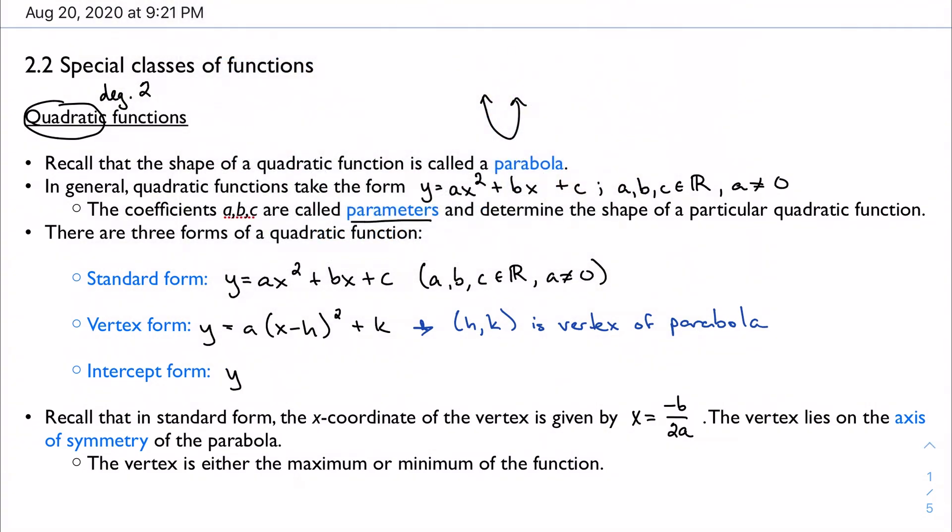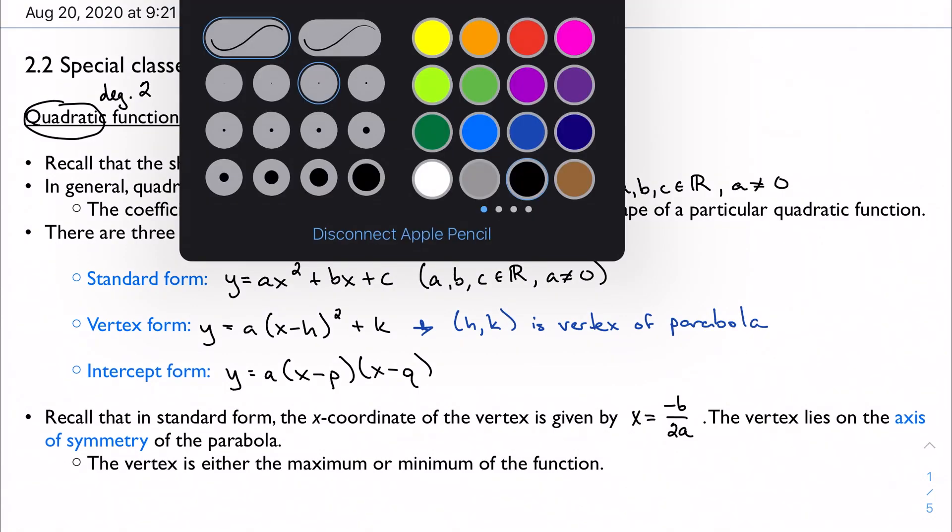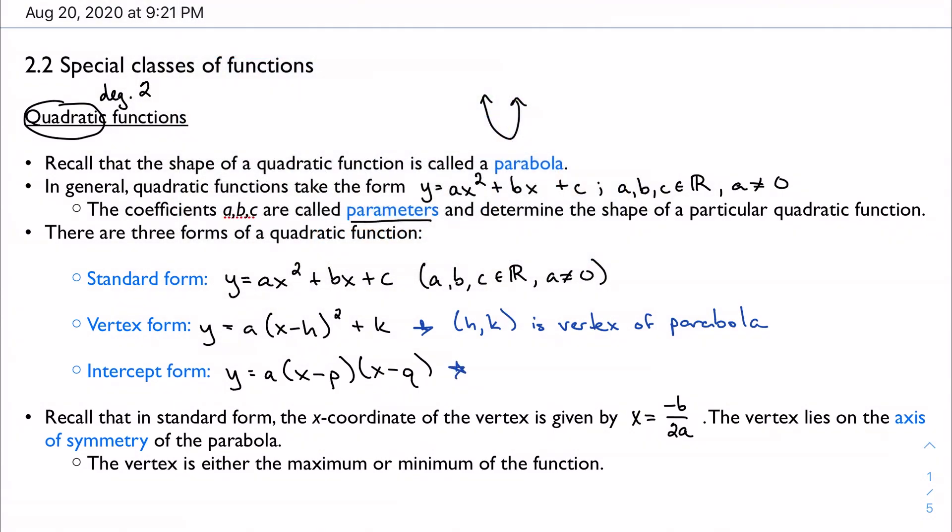And the last form is intercept form, which, as you might imagine, gives the intercepts, the x-intercepts of the parabola. And you probably noticed that this looks like a factored polynomial. Well, if you remember, if you solve a polynomial equation and you factor it, it gives you the zeros, and the zeros are just the x-intercepts. So p and q are the x-intercepts, also called the zeros of the function.